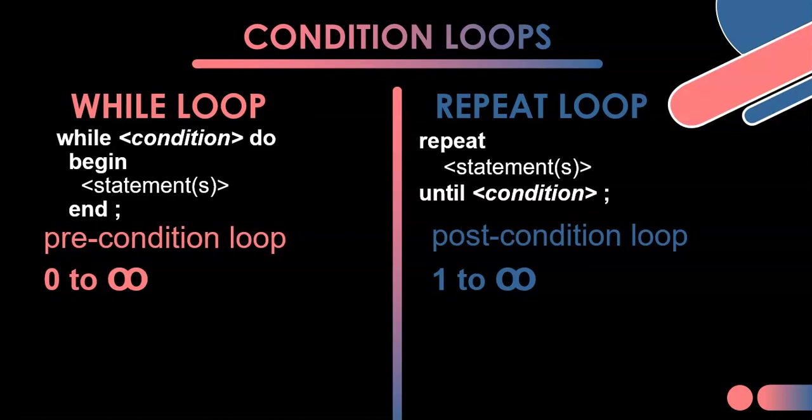When you want to run the code in the loop at least once, you would probably use a repeat loop over a while loop. And if there's a possibility the loop might not even run, you'd go with a while loop. But other than that, most of the time you could use either one.